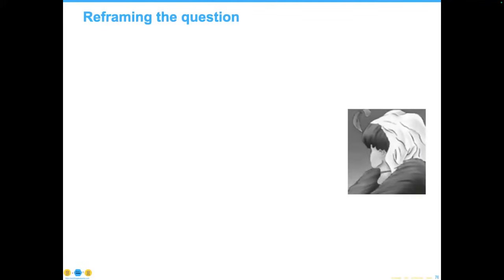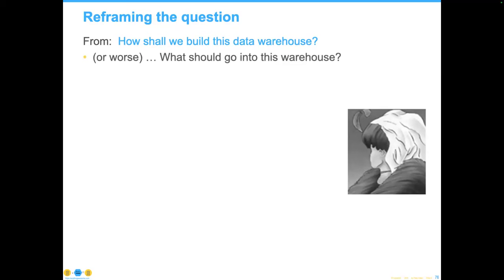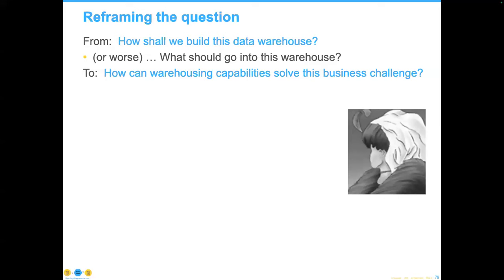When we look at best practices, we need to change the way we approach warehousing. Most companies start by asking, 'How shall we build this data warehouse?' or even worse, 'I've already got a warehouse — what should I put into it?' That's putting the cart before the horse. The question is, 'How can warehousing capabilities solve this business challenge?' That gives you a more generic answer and a design that addresses not just the immediate problem, but a multitude of challenges. Consider whether you have foundational practices, project deliverables, an agreed-upon enterprise vocabulary, and your warehouse set up as an auditable system of record.